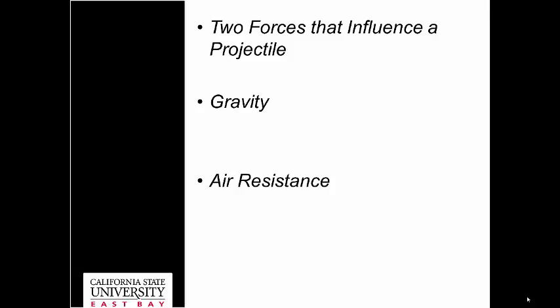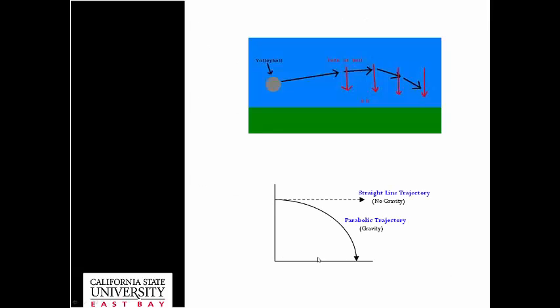The other force is air resistance — that's the wind, the air resisting the forward motion. So one acts in the vertical direction, gravity, and one acts in the horizontal direction, air resistance. If there was no gravity, our projectile would go in a straight line, but due to gravity we have this parabolic trajectory. Gravity is always pulling it down, creating this parabola.